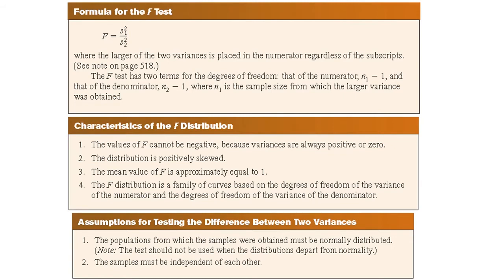For two-tailed tests, the alpha value must be divided by 2, and the critical value placed on the right side of the F-curve. If the standard deviations instead of the variances are given in the problem, they must be squared for the F-test formula — take note that this formula stands for variance. If the degrees of freedom cannot be found in the table, the closest value of the smaller size should be used.